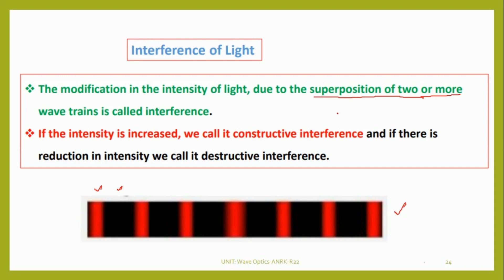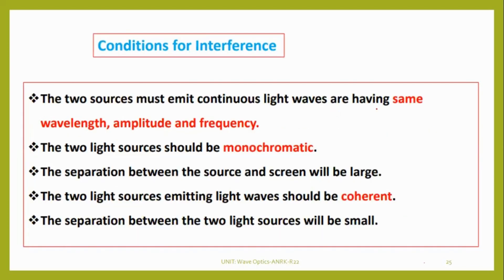In order to get interference, there are some conditions. The first condition is two light sources must emit continuous waves and have same wavelength, amplitude, and frequency. This is simply what we can say: it should be coherent. It should be monochromatic, which means single color.